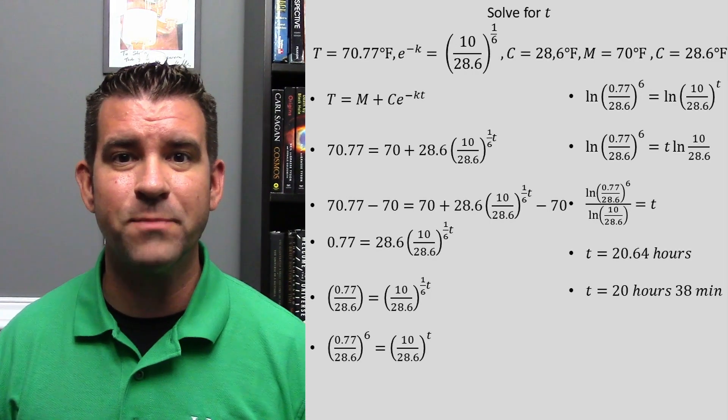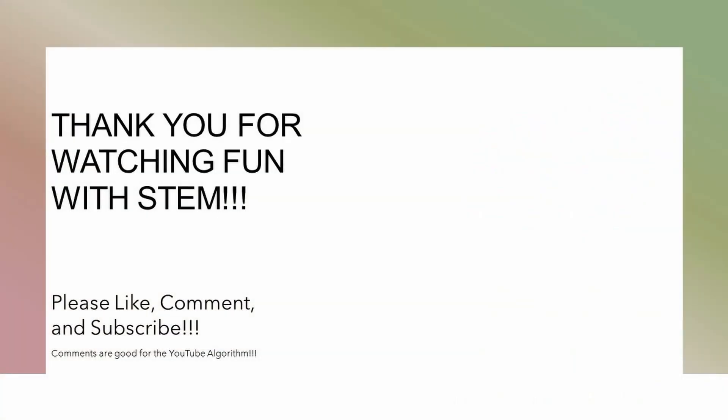See? Math can be fun. Based on the average person's temperature being 98.6 degrees, the room at a constant 70 degrees, and knowing a body cools to 80 degrees after 6 hours, with its current temperature at 70.77 degrees, our handsome victim died 20 hours and 38 minutes ago. Chief, we caught someone who was seen leaving the residence about 20 and a half hours ago. That's our guy. Book him, Dan-o.